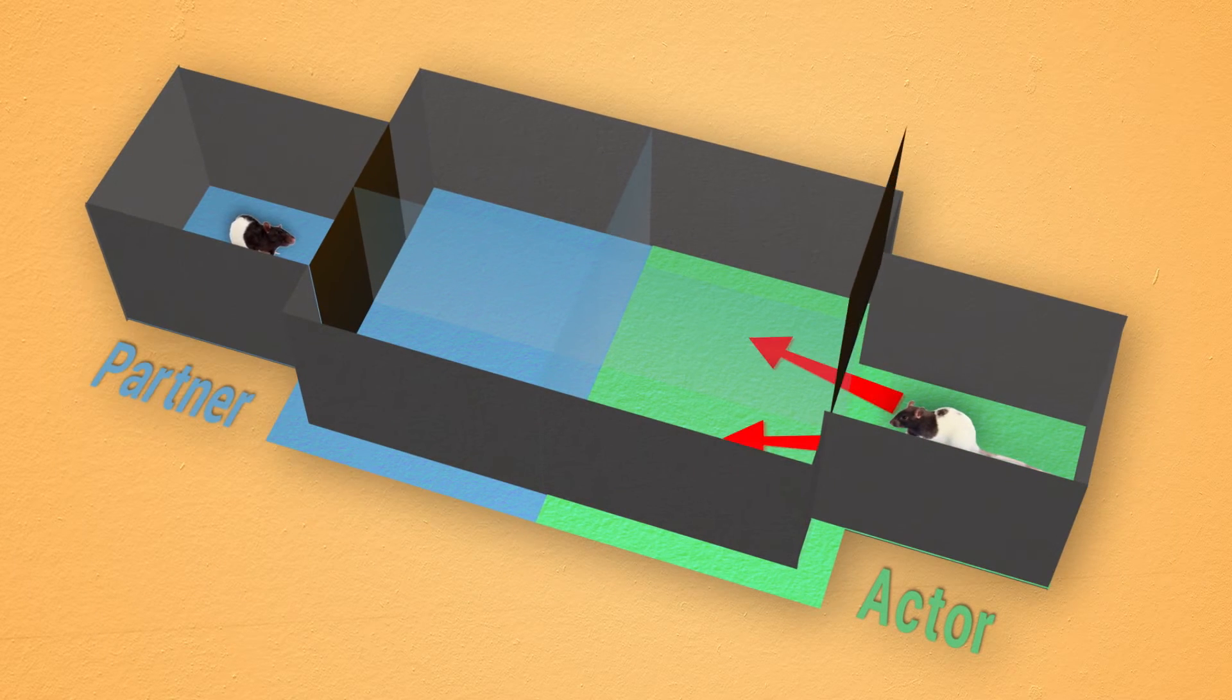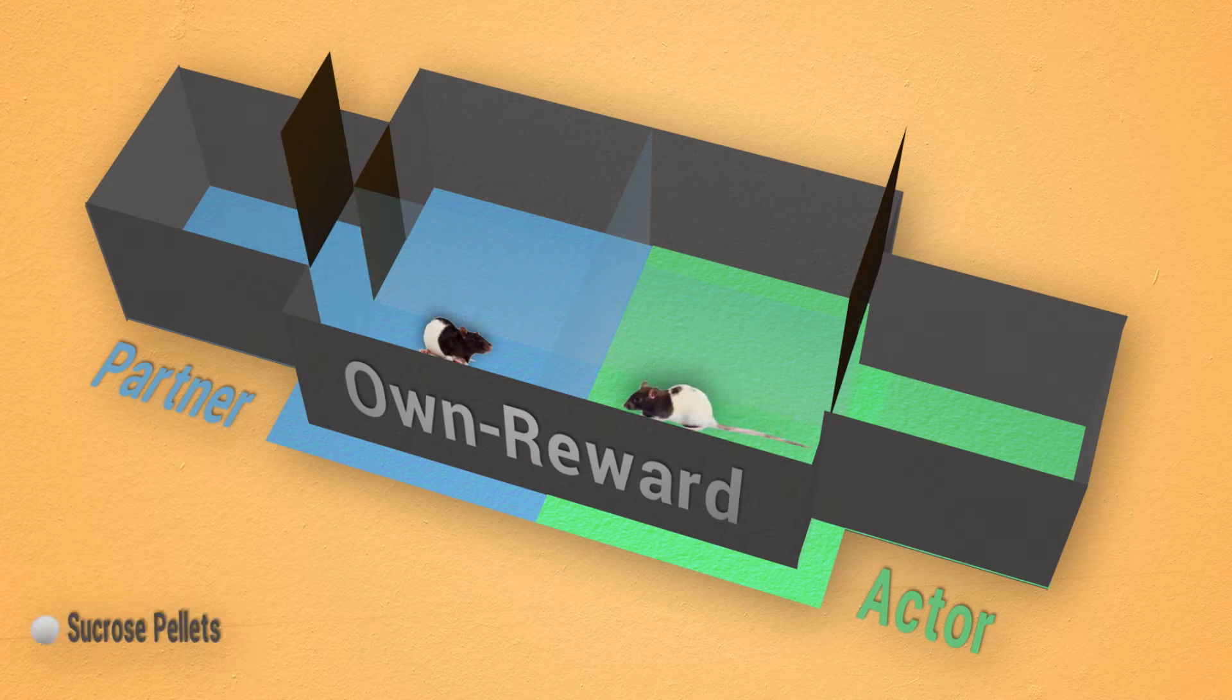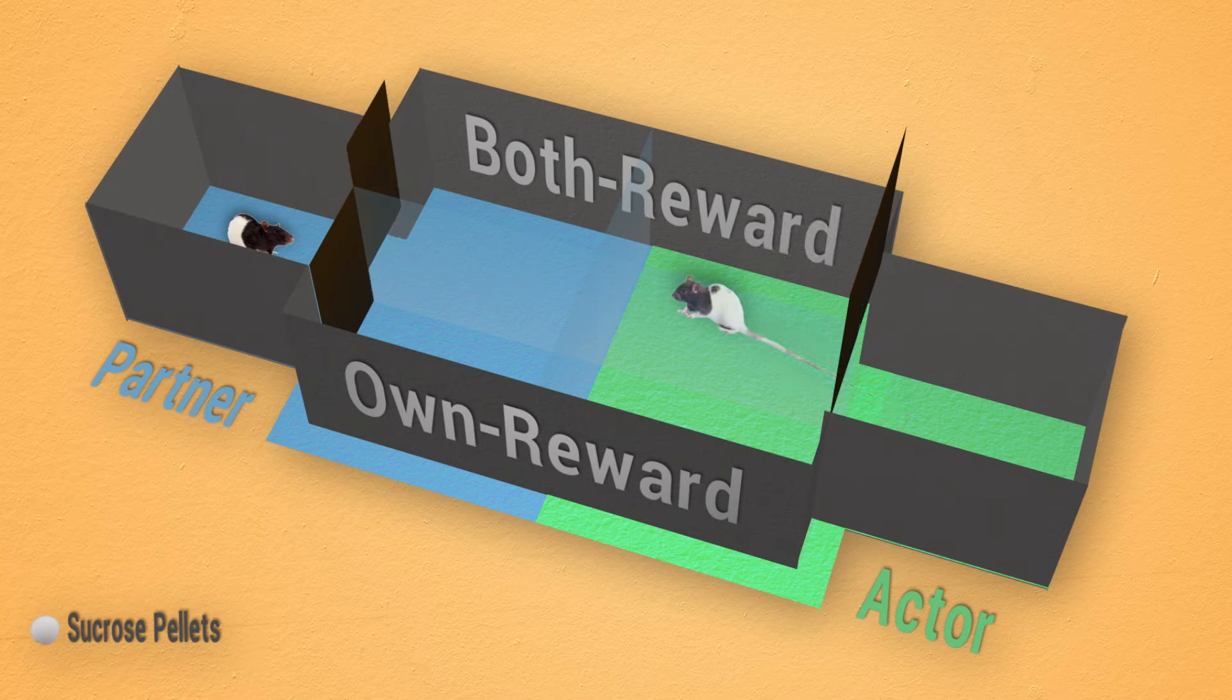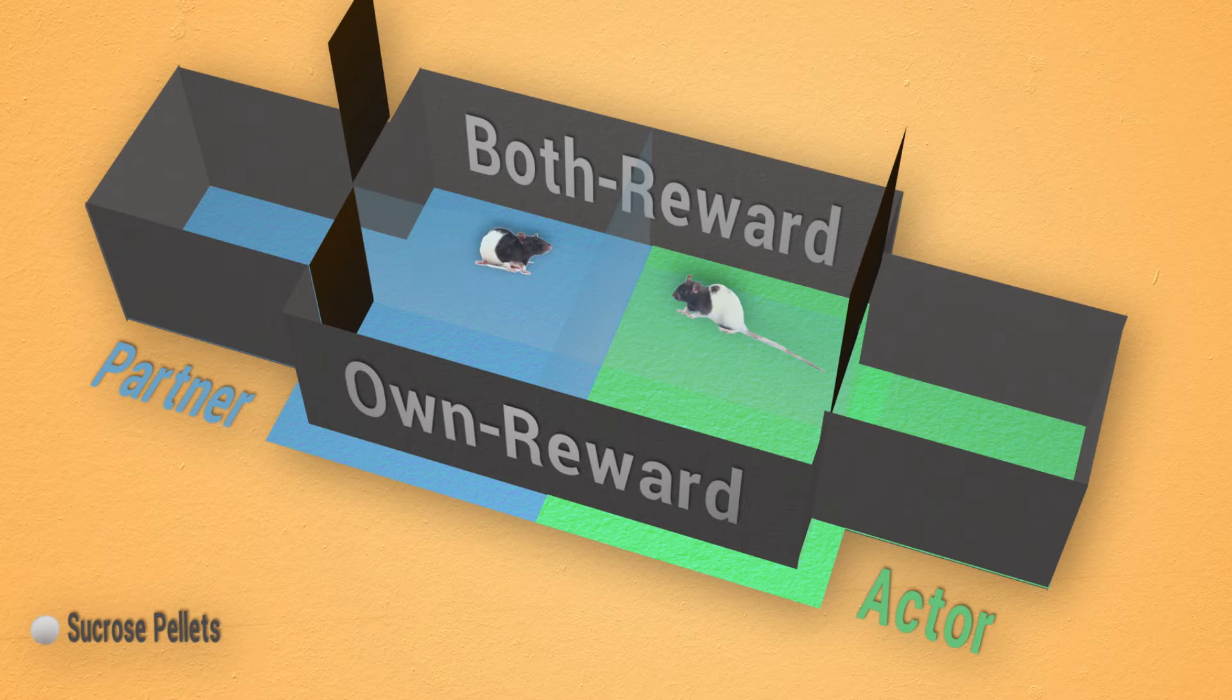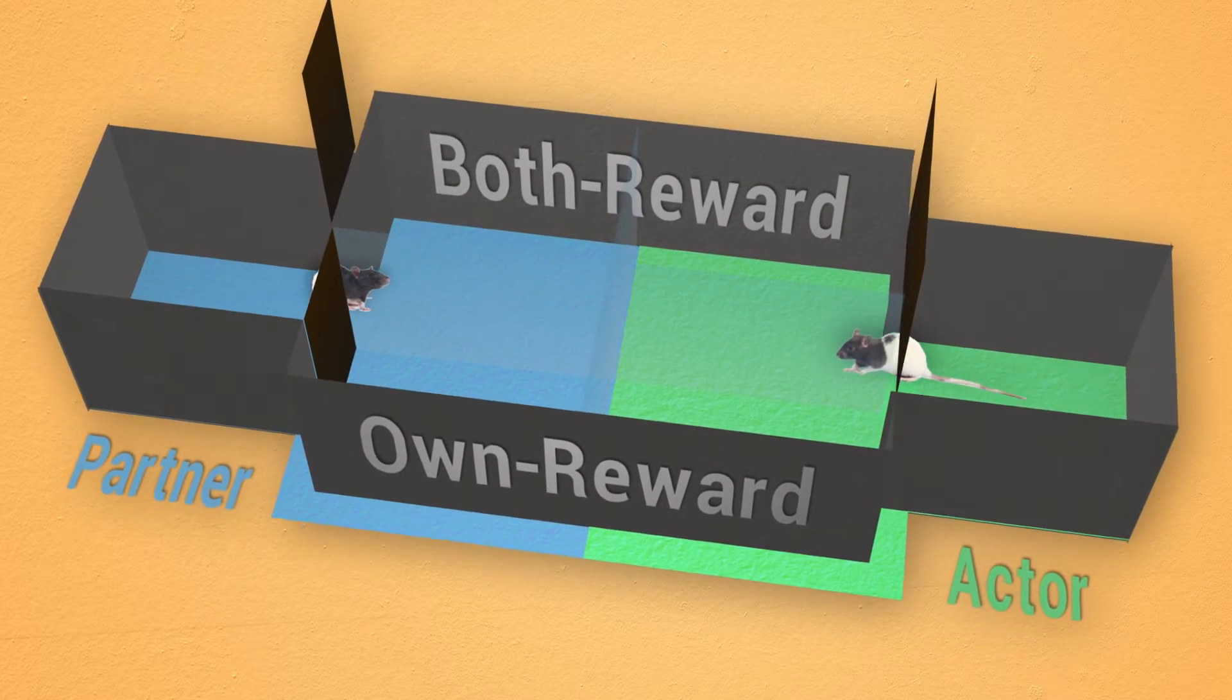The own-reward choice resulted in the delivery of three sucrose pellets only accessible to the actor, whereas the both-reward choice produced an additional three pellets for the partner. Thus, the partner's food access was contingent upon the actor's choices.